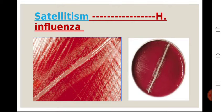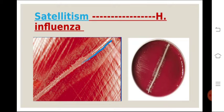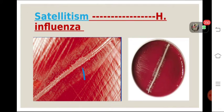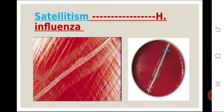Satellitism is a phenomenon shown by Haemophilus influenzae. H. influenzae is not able to grow on 5% sheep blood agar alone. When we put a pure streak of Staphylococcus aureus on this blood agar, the Staphylococcus aureus releases factor V (NAD) into the agar. H. influenzae requires both factor V and factor X. Since the blood agar already has factor X but not factor V, the Staphylococcus provides factor V, allowing H. influenzae to grow near the Staphylococcus streak — this phenomenon is called satellitism.